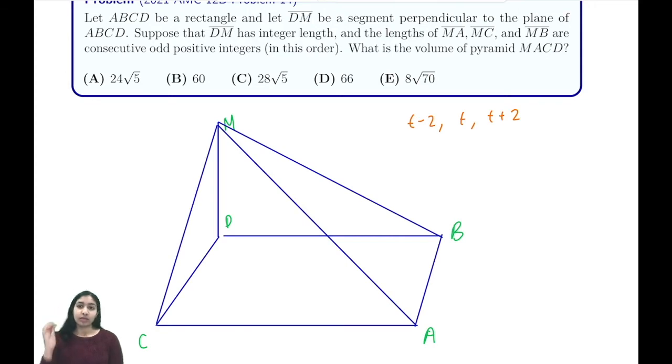So we know that MA is the smallest of them, so MA is t-2. Sorry, it seems that I've mislabeled this—this should be B and then A. So MA is the smallest of these, so it should be t-2, and then MC is the next one, so MC is going to be t, and then MB is going to be t+2.